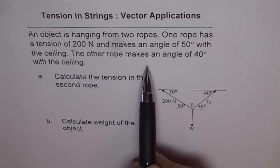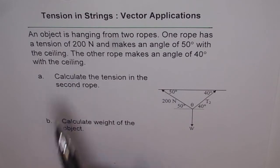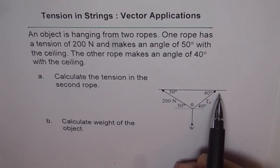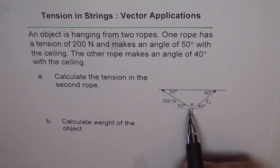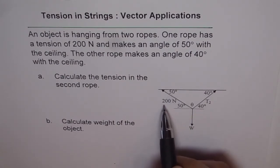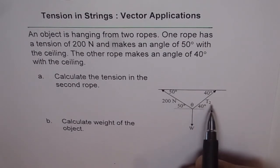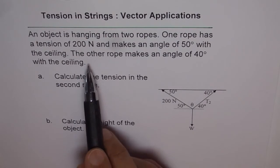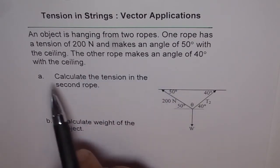The other rope makes an angle of 40 degrees with the ceiling. Here we have this ceiling and these are the two ropes. One makes an angle of 50 degrees which has tension of 200 newtons. The other one makes an angle of 40 degrees with the ceiling.